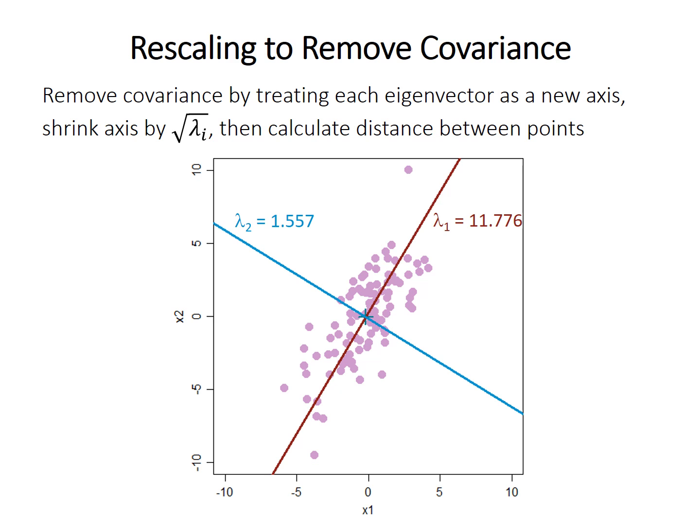And we shrink on the blue axis only a little bit. This removes the covariance. By removing the covariance, we can now use Euclidean distance between the rescaled points to get our actual multivariate distance measure.